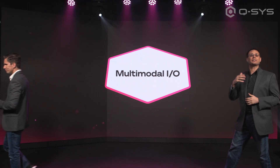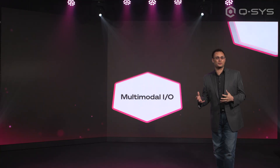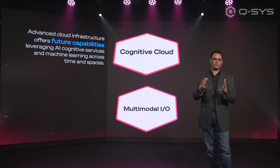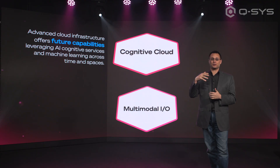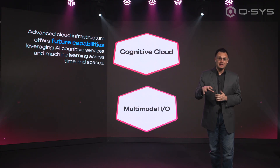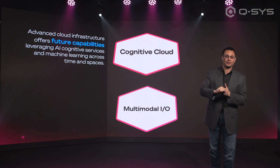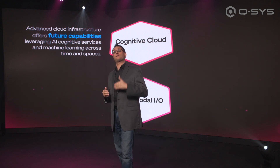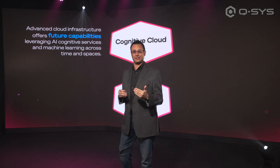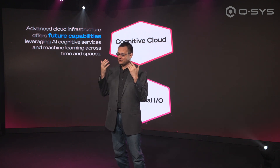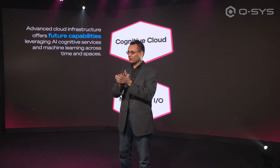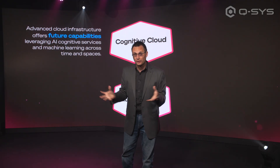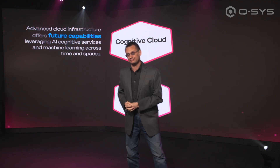Next is the cognitive cloud. You would expect to have an advanced cloud infrastructure to support your systems today for things like real-time monitoring and managing of your systems. But it also supports you for future capabilities like incorporating AI, cognitive services, machine learning — anything that's going to help incorporate all of your devices in your ecosystem together.